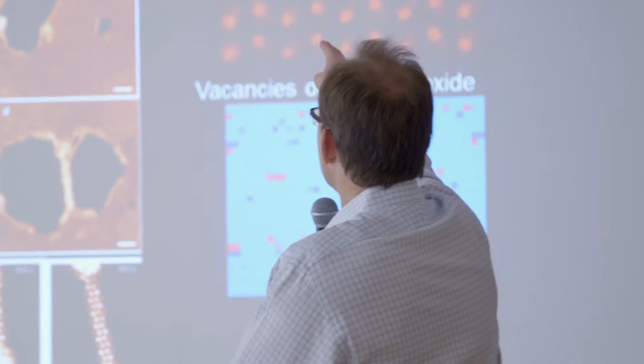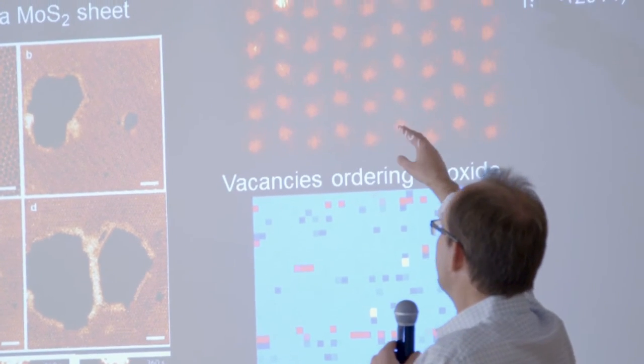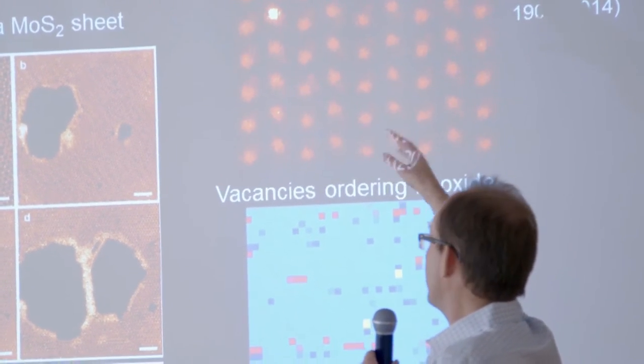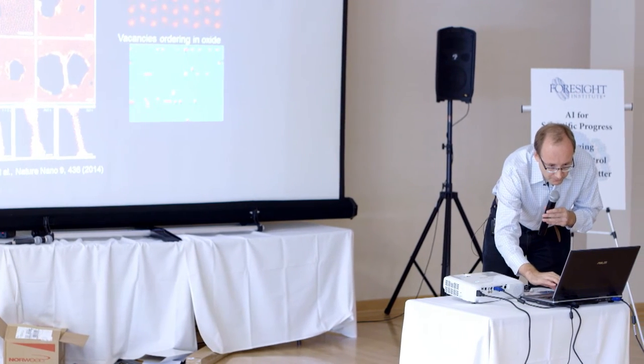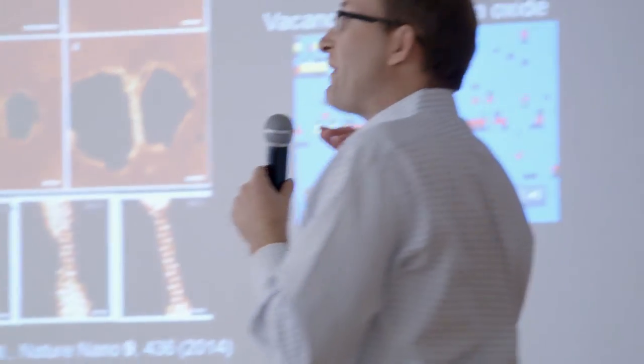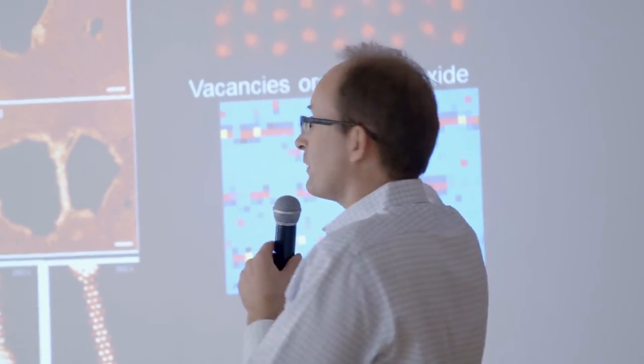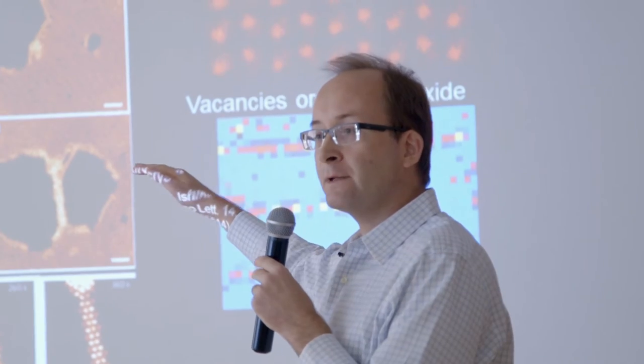Also two years ago, we were able to observe how a single interstitial atom is basically kicked by the electron beam inside the lattice. So we can move it where it was or where it wants to go. We were able to observe how the oxygen vacancies inside the solid order to form the brownmillerite planes. And the question that I bring to your attention, so the idea here is,